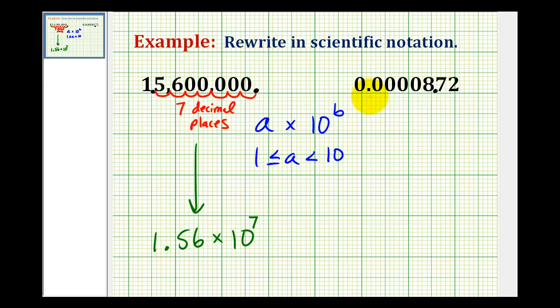Now let's count how many decimal places we have to move from here to here. It would be 1, 2, 3, 4, 5, which means in scientific notation this would be equal to 8.72 times 10 to the negative 5, because we move the decimal to the right.